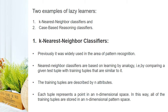There are two examples of Lazy learners: K-nearest neighbor classifiers and case-based reasoning classifiers. K-nearest neighbor classifiers were previously used in pattern recognition, but with the invention of parallel computing and hardware, this method became popular in data mining classification. Nearest neighbor classifiers are based on learning by analogy — comparing a given test tuple with training tuples that are similar to it. The training tuples are described by N attributes, and each tuple represents a point in an N-dimensional space, so all training tuples are stored in an N-dimensional pattern space.